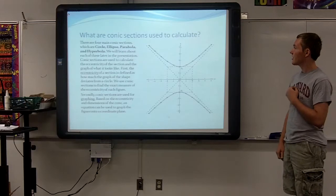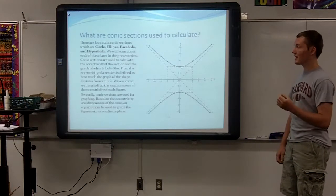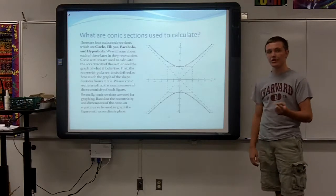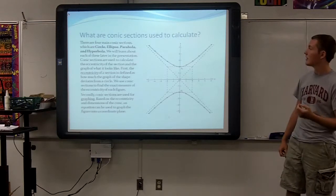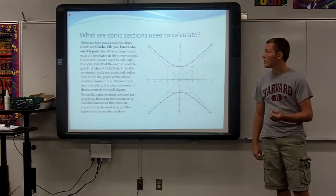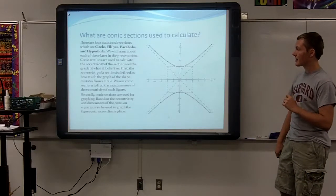So what are conic sections used to calculate? There are four main conic sections, which are circle, ellipse, and a circle is actually a type of ellipse, parabola, and a hyperbola. We will learn about each of these later in the presentation.